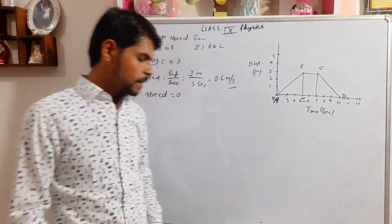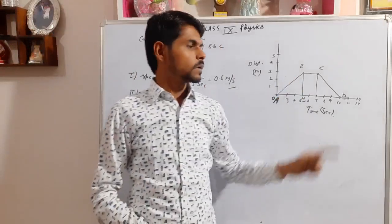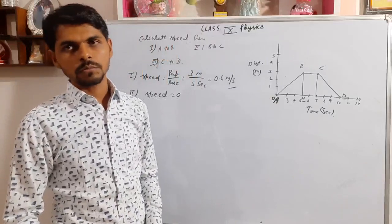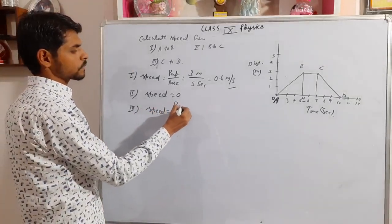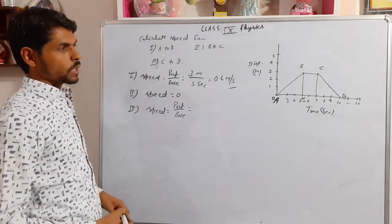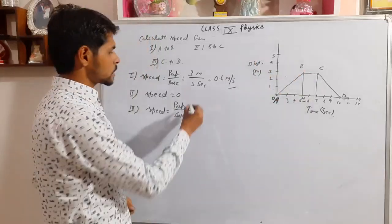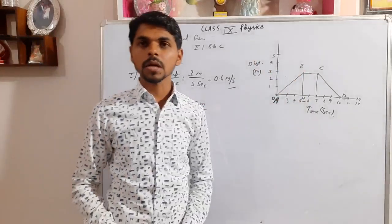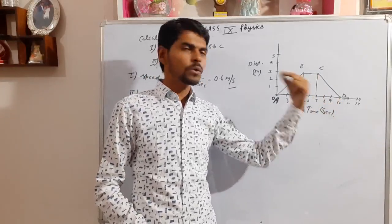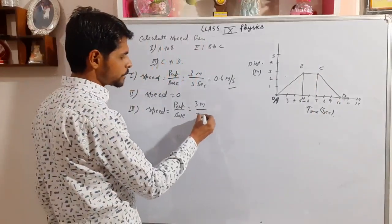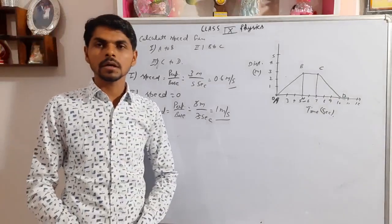For the third part, we calculate the speed from C to D. The formula is again perpendicular upon base. There is a triangle from C to D. The perpendicular is 3 meters. The base goes from 7 to 10 seconds, so that is 3 seconds. Speed equals 3 divided by 3, which is 1 meter per second. The speed from C to D is 1 meter per second.